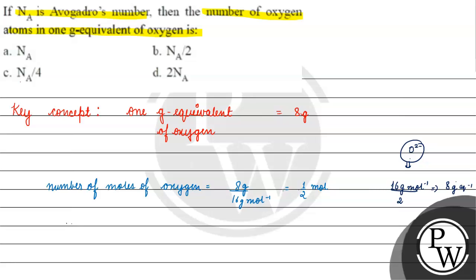Now, number of moles is basically equal to number of oxygen atoms by Avogadro's number, which is 6.022 times 10 to the power 23 per mole. But we know the number of moles is half.